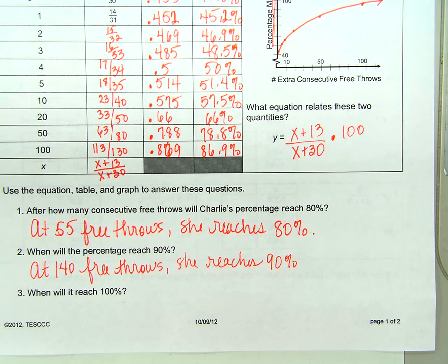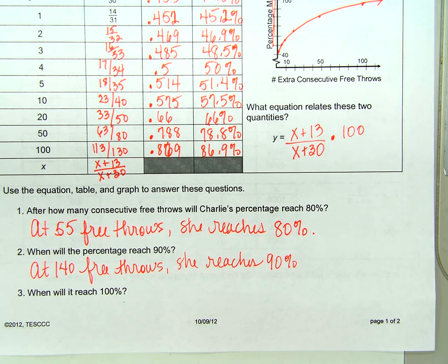When will it reach 100%? What do you mean, never? Ever? Not if she makes every single free throw from now to the end of time — and then when she gets to heaven, she makes them all there too. It will never reach 100%. She had a bad start. Even if she had only missed one, it's still not 100%, is it?